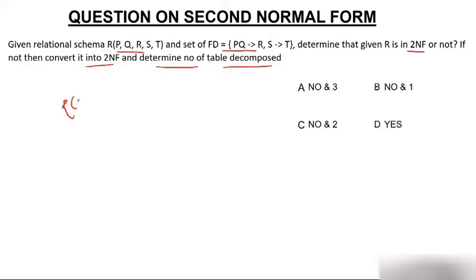Let's start. Given attributes P, Q, R, S, and T, and functional dependencies PQ→R and S→T. What you do is make an arrow diagram. As I have already told you how to find candidate key, your first task is to find the candidate key. So PQ→R and S→T.